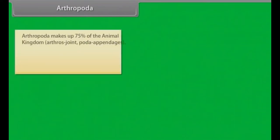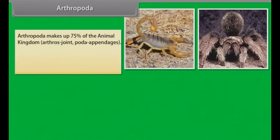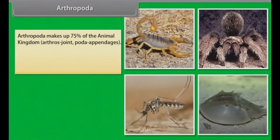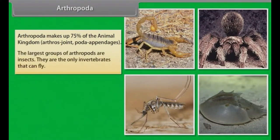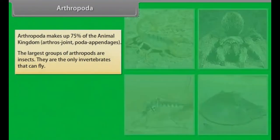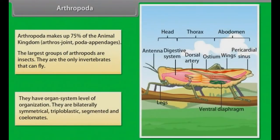Arthropoda makes up 75% of the animal kingdom. 'Arthros' means joint and 'poda' means appendages. The largest group of arthropods are insects — the only invertebrates that can fly. They have organ system level of organization and are bilaterally symmetrical, triploblastic, segmented and coelomate.